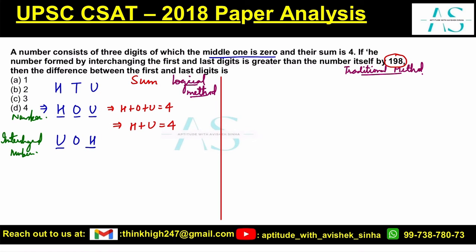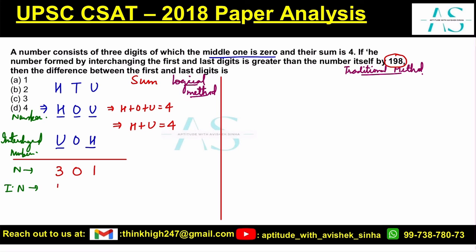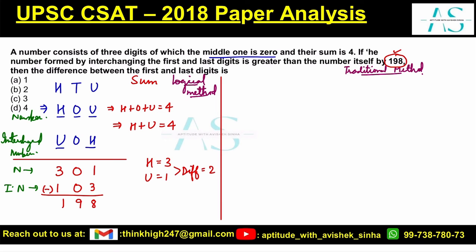Using hit and trial, let's take H as 3 and U as 1 — their sum is 4. The number is 301 and the interchanged number is 103. The difference: 301 minus 103 equals 198. Bingo! So H is 3, U is 1, and the difference between H and U is 2. Option B is our correct answer.